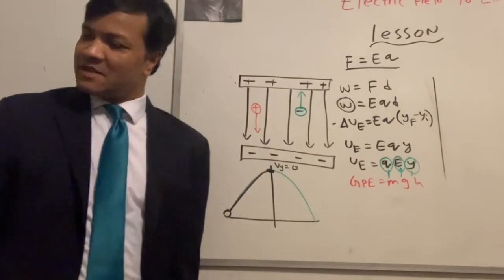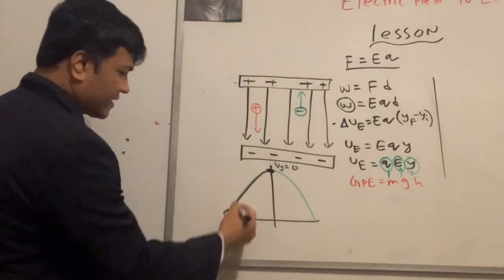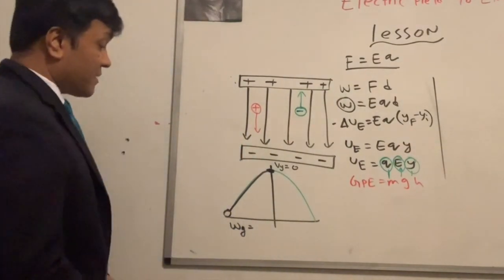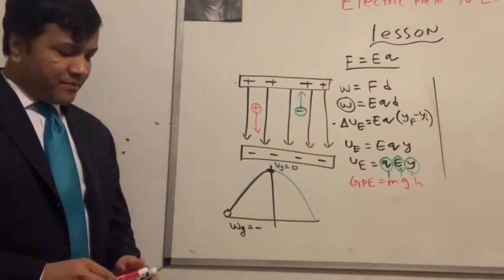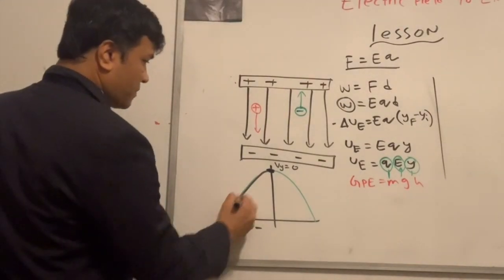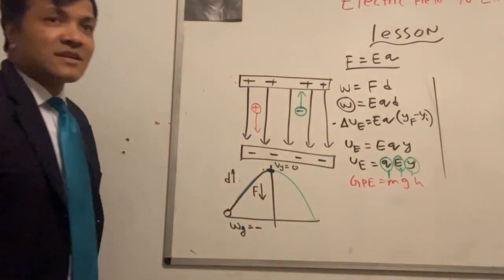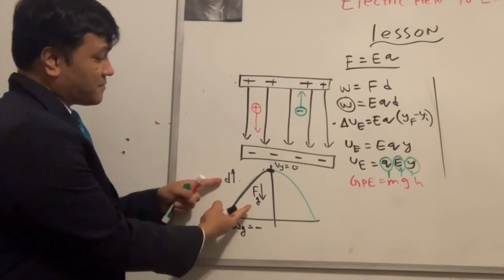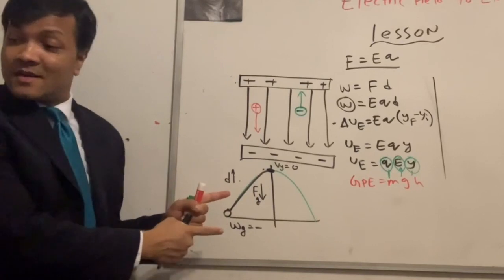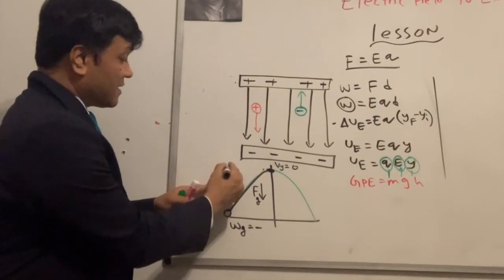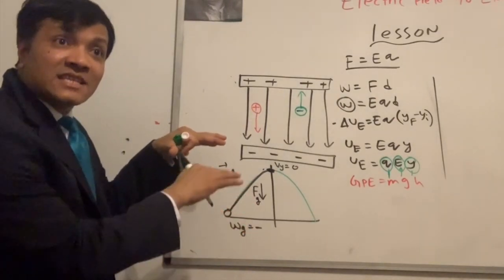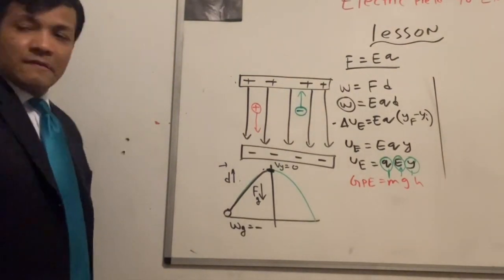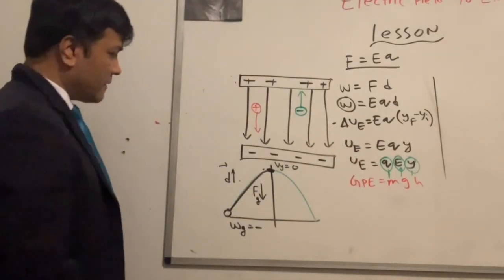On the upward half, what is the work done by gravity — positive or negative? Negative. Why? The displacement is upward but the gravitational force is downward — opposite directions — so W = F·d is negative times positive, which is negative.